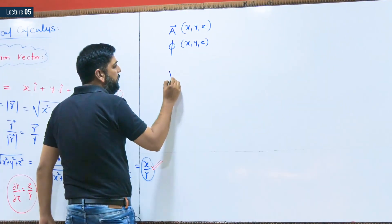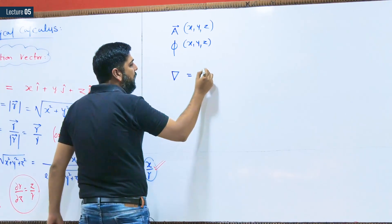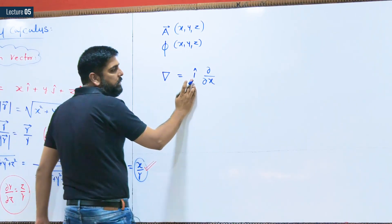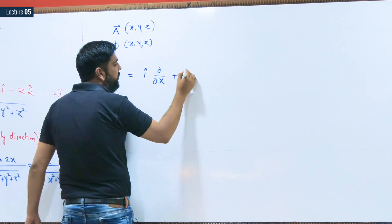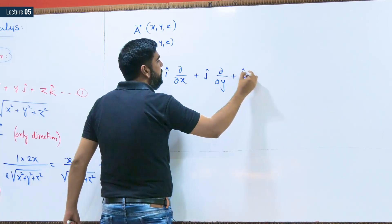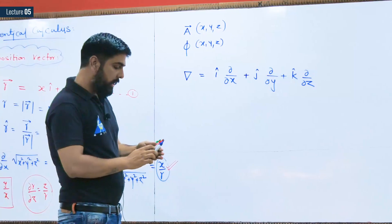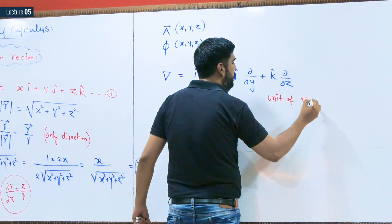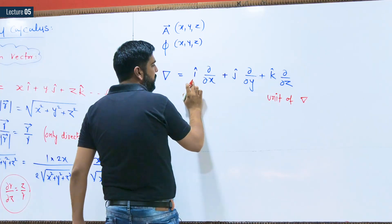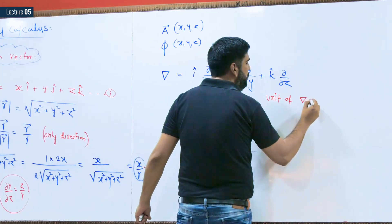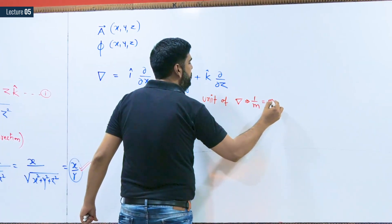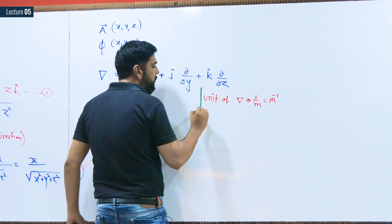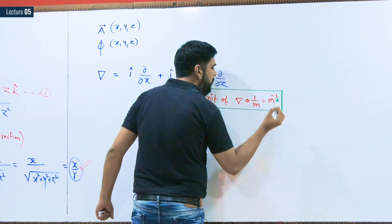We introduce the del operator, also called the nabla operator. It is defined as i ∂/∂x + j ∂/∂y + k ∂/∂z. Regarding units: the del symbol and the partial derivative cancel, leaving 1/x, so the unit of del is 1/m, or m⁻¹. The unit of the del operator is m-inverse.